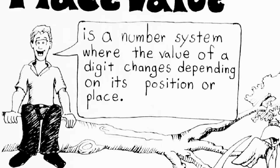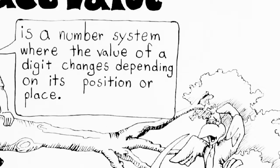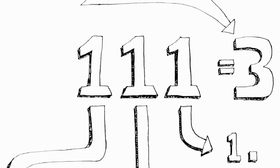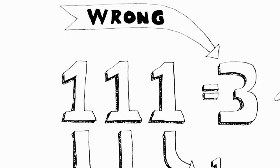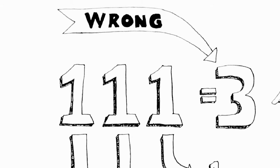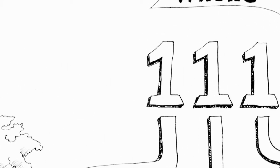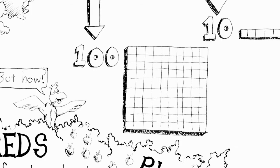What does it mean when we say that a digit changes value just because of its position or place? Let's look at this number. If you don't really know much about place value, you might see three ones in a row and think those three ones equal three. Well, that would be wrong, because in our place value system each of those ones is equal to something else — they each have a different value. The first one, all the way on the left, is actually equal to 100.